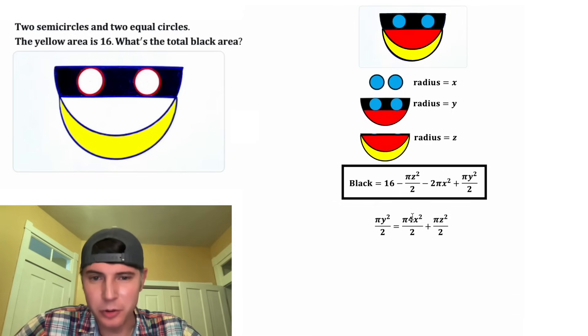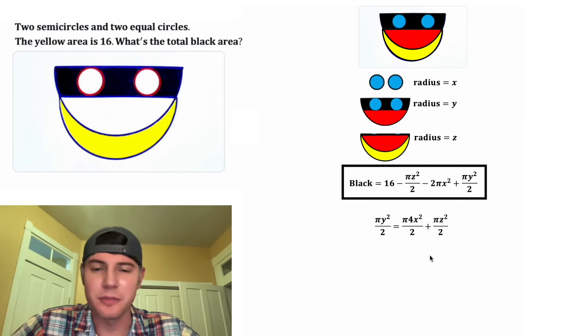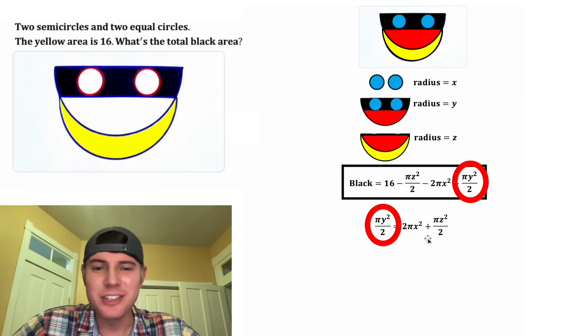Before we move on, I'm noticing one thing real quick. This 4 and this 2 can simplify to be a 2 on top. And now we have a really cool equation. Notice how these two things are identical. That means that we can substitute all of this in the place of this.